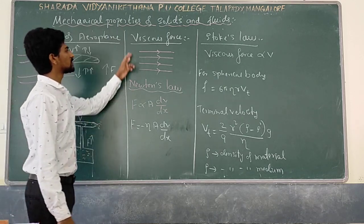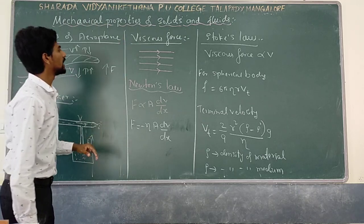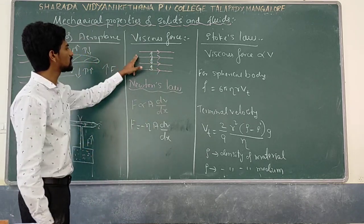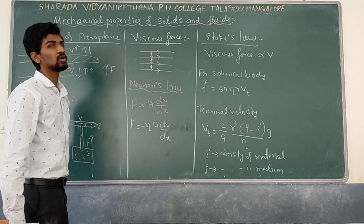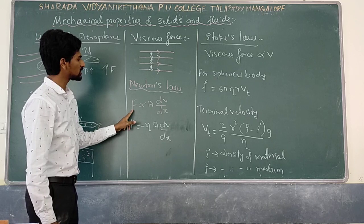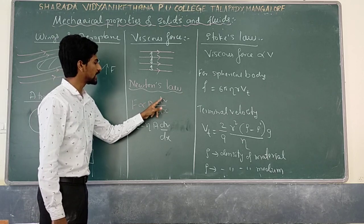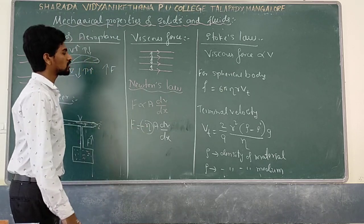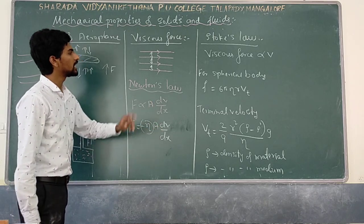Viscous force in fluids: consider the fluid as different layers. Between these layers there will be a force called viscous force. Because of this viscous force, the relative motion between layers decreases — it opposes relative motion. According to Newton's law, viscous force is directly proportional to area and velocity gradient: F is proportional to A × dv/dx. Introducing constant eta, F = −eta × A × dv/dx, where eta is the coefficient of viscosity.